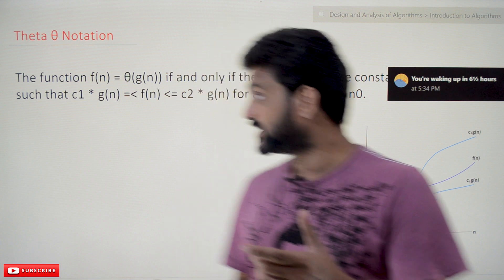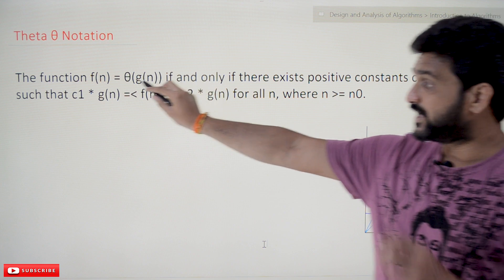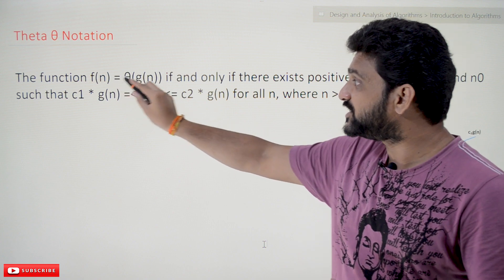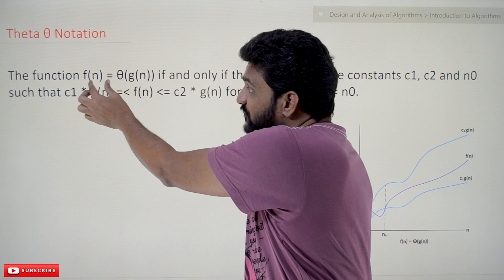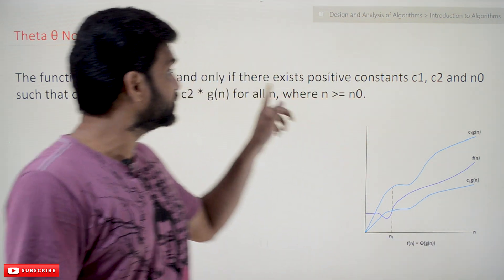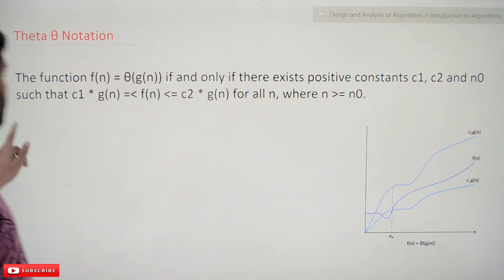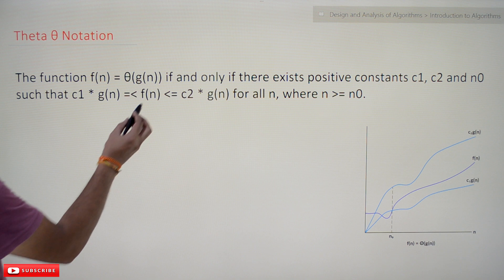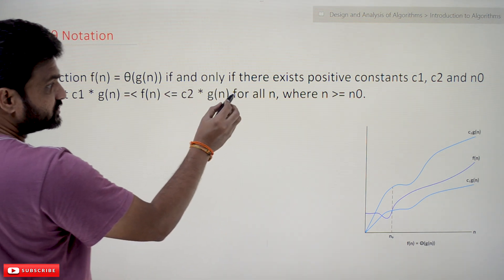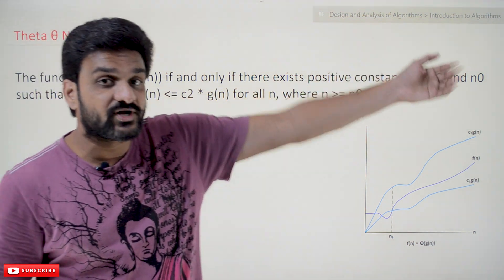Now, what is theta notation? The function f of n is theta of g of n. We can represent f of n as theta of g of n if and only if there exist positive constants c1, c2, and n0, such that f of n is greater than or equal to c1 into g of n, and f of n is less than or equal to c2 into g of n, for all values of n greater than or equal to n0.